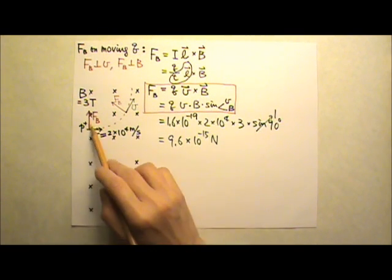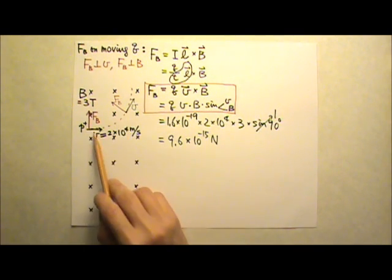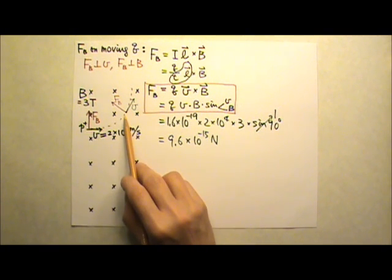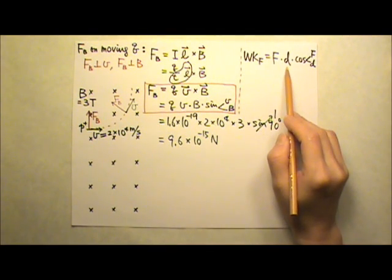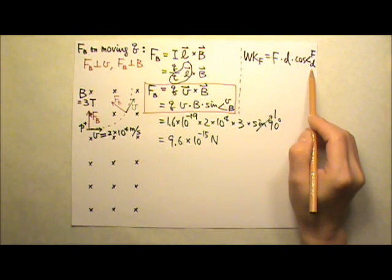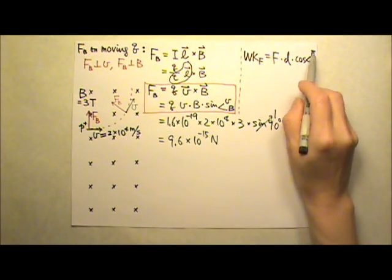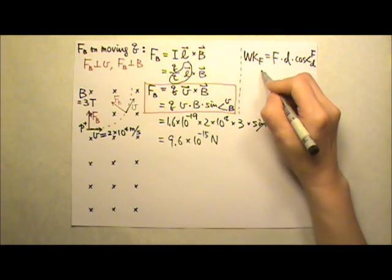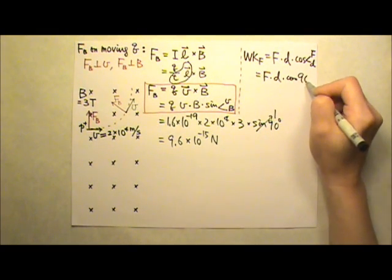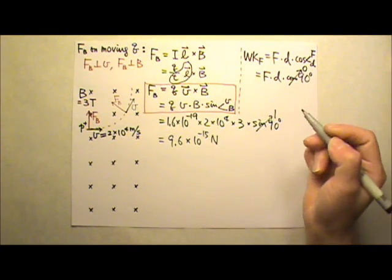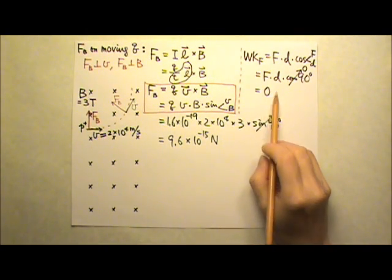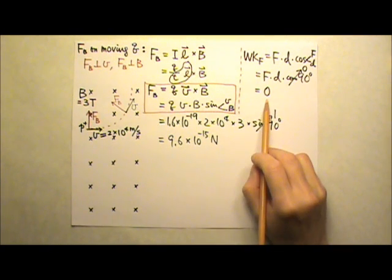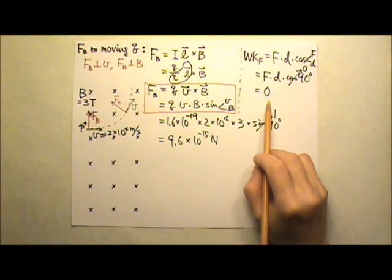The magnetic force is always perpendicular to the path of the moving charge, so it does not do any work. The work done by a force is force times displacement times the cosine of the angle between them, and that angle is always 90 degrees — cosine 90 degrees is zero. So magnetic force cannot do any work, cannot give or remove energy, and cannot change the kinetic energy or speed of the charge.